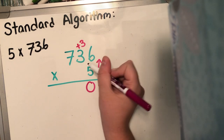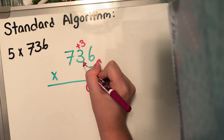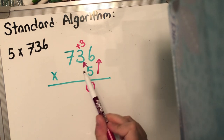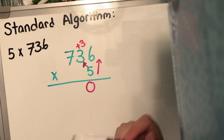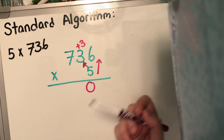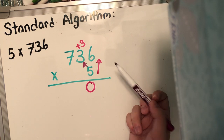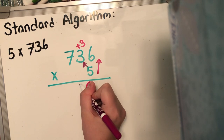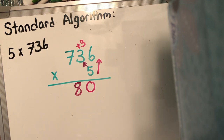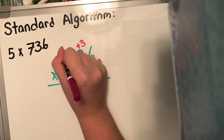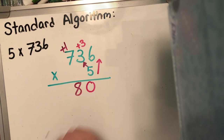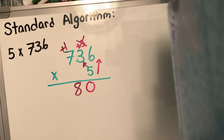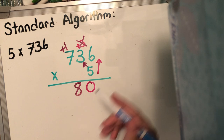Now I'm gonna take this five and go across to the tens place. So it's no longer five times three, it's really five times 30, which I know is 150. Now I'm gonna add three more to 150 and I know it's gonna be 180. So I'm gonna put that eight down and carry that one. Now I can cross off this three because I already used it. If it's going to distract or confuse you, just cross it off — it's not a problem.